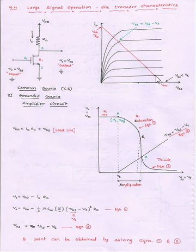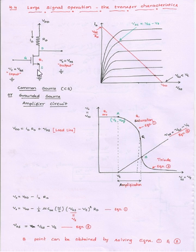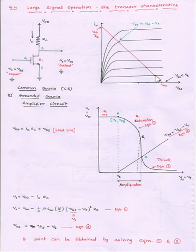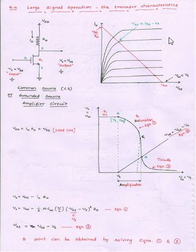Each intersection point is important because at every intersection point we can obtain the corresponding output voltage. For input voltage VGS less than or equal to the threshold voltage, the transistor is off, so the output voltage equals VDD. As input voltage increases, the intersection points move along the load line and the corresponding output voltage decreases for VGS1, VGS2, and so on.